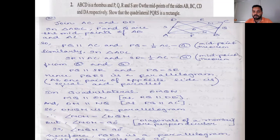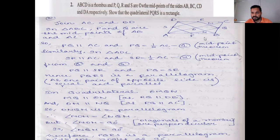To show PQRS is a rectangle, we must show one internal angle is 90 degrees. We will show angle Q is 90 degrees. Consider quadrilateral OMQN — we need to show it is a parallelogram. In quadrilateral OMQN, MQ is parallel to ON.